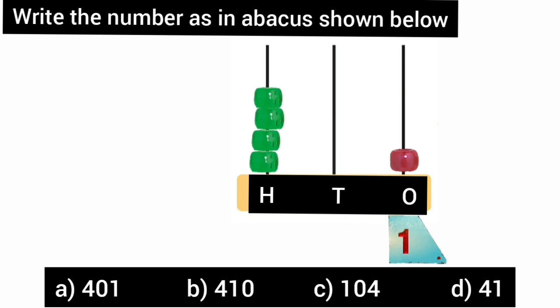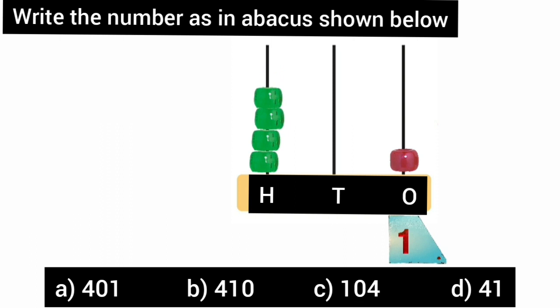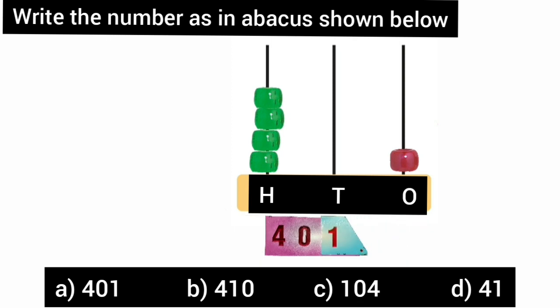Now children, you tell me, how many beads are there at the hundreds place of the abacus? Yes children, very good. There are four beads, so it is four hundred. By counting the number of beads in the abacus, the number comes out to be four hundred one. So option A is the correct answer of this question.